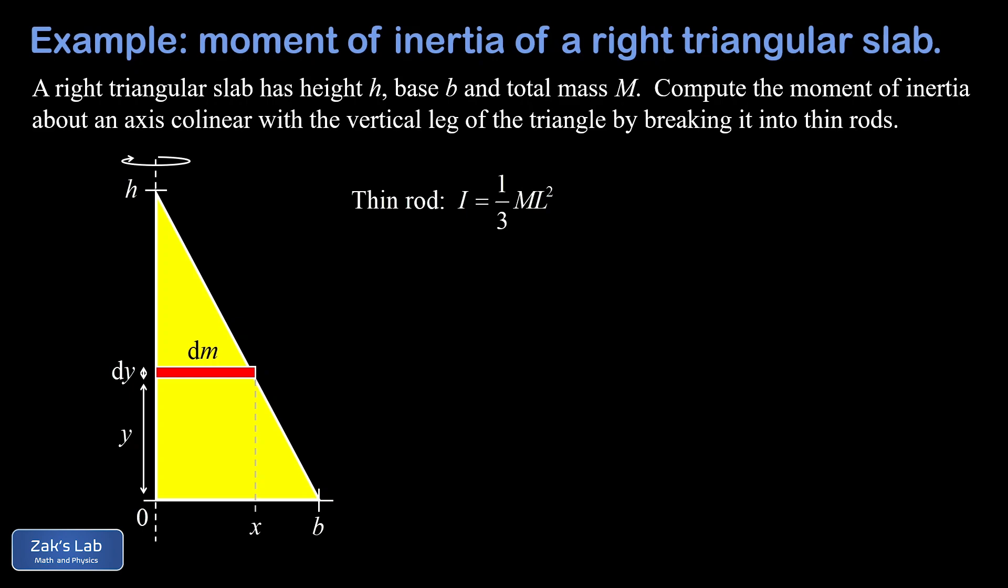That's what we're doing here - we're slicing into horizontal rods and as this triangular slab is rotating about that vertical axis, those rods are all rotating about one end. The second point I want to make is about area density.